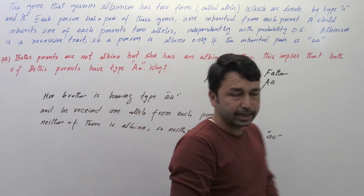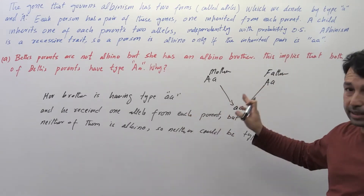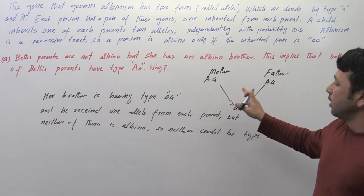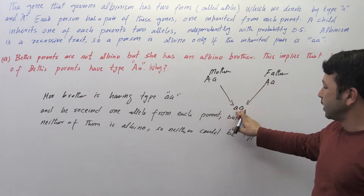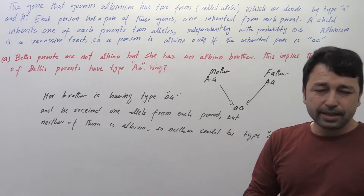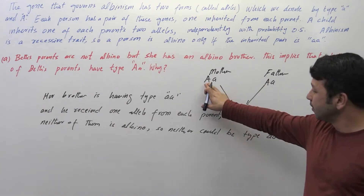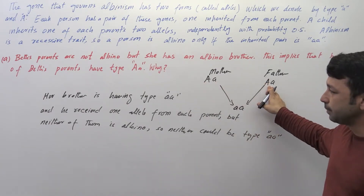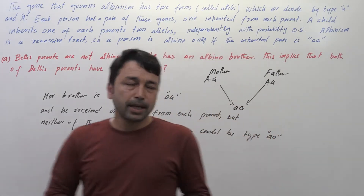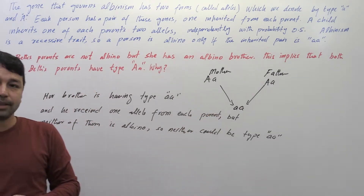To explain again: each parent contributes one allele, and her brother has type small 'aa', so one small 'a' is coming from each parent. Since her parents are not albino, they couldn't be of type small 'aa'. So the other option is capital 'A' and small 'a'. That is the answer to Part A.